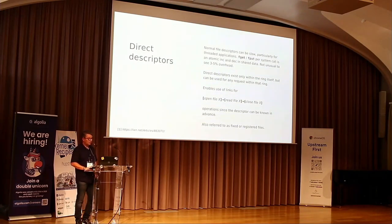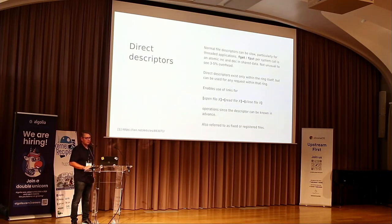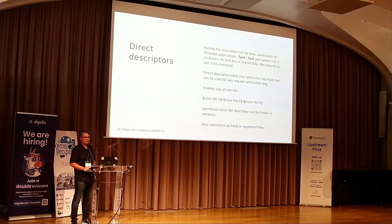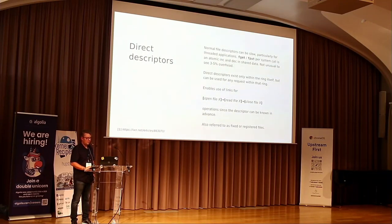A feature called direct descriptors: everybody's familiar with normal file descriptors. io_uring supports direct descriptors, which are like file descriptors but exist outside the normal file table and are only valid within that specific ring. If you've ever profiled production workloads, you've likely seen fget/fput or fget_light/fput_light dominating. With threaded applications sharing a file struct, you have to do reference counting on files, which is more costly than most people realize. By moving file descriptors into the io_uring ring itself, we can keep a permanent reference and avoid fget/fput per syscall.